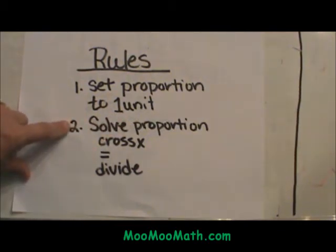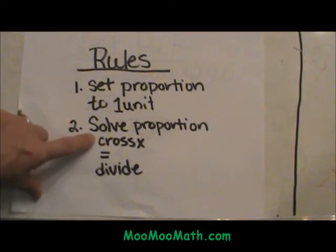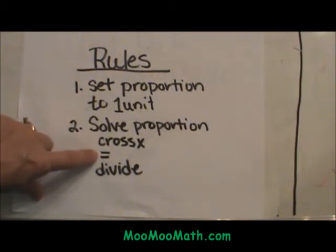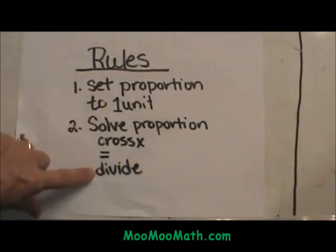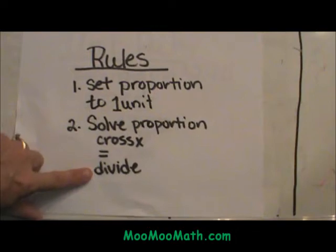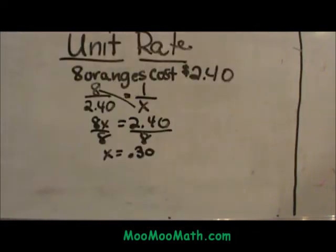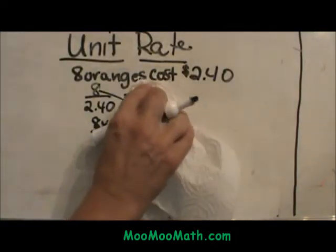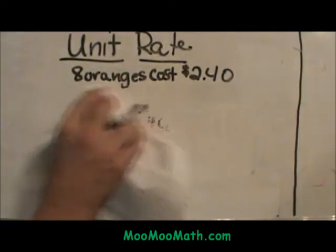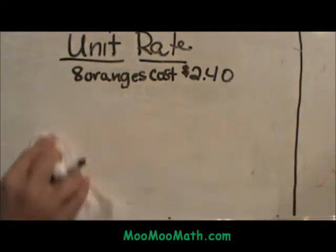The steps for solving proportions are in another video. You do a cross product, set those two equal to each other, and then you divide by the coefficient. So let's go back and re-work this problem in slow-mo.